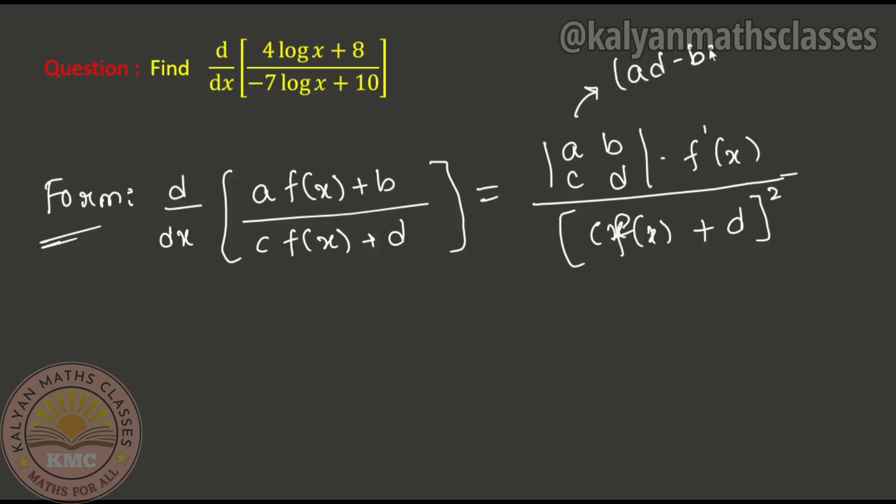Using this formula, ad minus bc: a is 4, d is 10, so 4 into 10 is 40. b into c is -7 into 8, which is -56. So we get 40 minus -56.